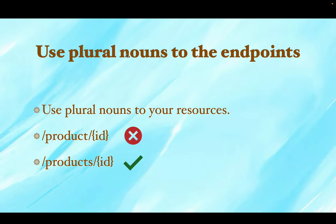We should be very sure that we use plural nouns for our endpoints. If I am going to fetch a specific product ID, I should not name my resource as slash product slash ID — it should always be slash products slash ID. Even if I am not passing an ID, it should be slash products and not slash product. We need to use plural nouns for all our endpoints.